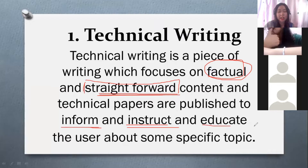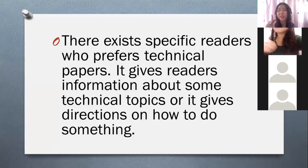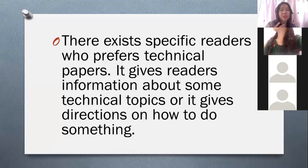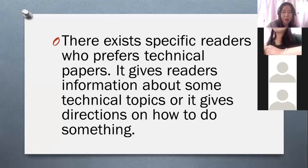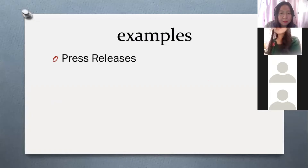Technical writing is there to inform, instruct, and educate the user about specific topics. For example, if you're going to buy a television, it comes with a manual. You read the manual — that kind of writing is called technical writing. It gives you information on how to do something, like how to use the television you just bought.